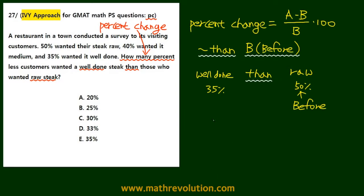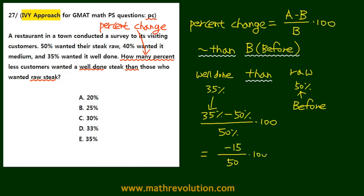The percent change in this case will be 35% minus 50%, over 50%, times 100. We can cross out the percent signs, giving us negative 15 over 50 times 100. Simplifying: 50 goes into 100 twice, so we get negative 30 — that's 30% less. Our answer for this question is choice C. Make sure to remember that the word that comes after 'than' is the value for before.